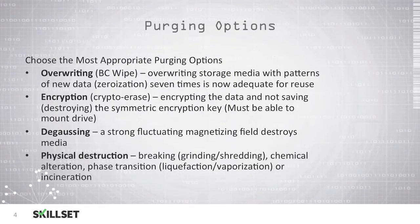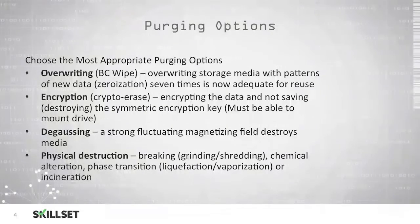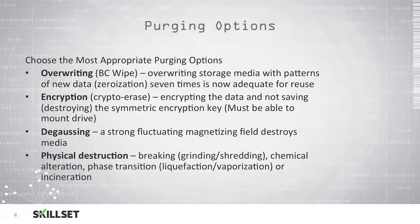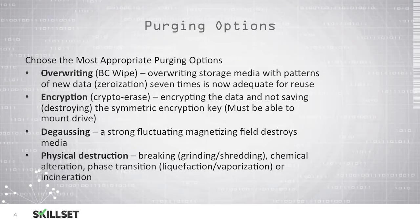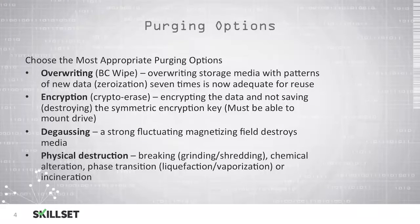Zeroization can be performed seven times or even 35 times in some instances, and this is typically adequate for reusing a piece of media. But you should remember for the CISSP exam that we would always reuse media at the same classification level and never at a lower level. For example, if a hard drive was used to store top secret data, we would never use that hard drive to store secret or unclassified data, even after we have wiped the data on the hard drive.